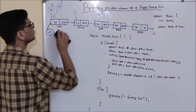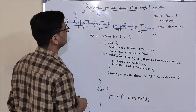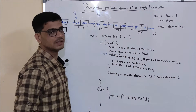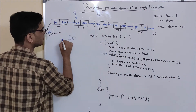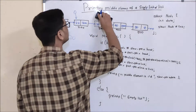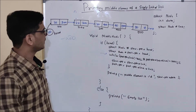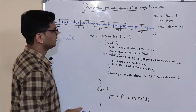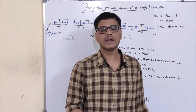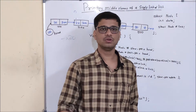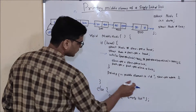Now let's see how this particular code is going to execute. As you can see here, this linked list has five elements, so the middle node will be the third node — that is, we should print 30. First of all, I am checking whether head is null or not. If I have an empty linked list, we cannot print a middle element, so we will print it as an empty list.